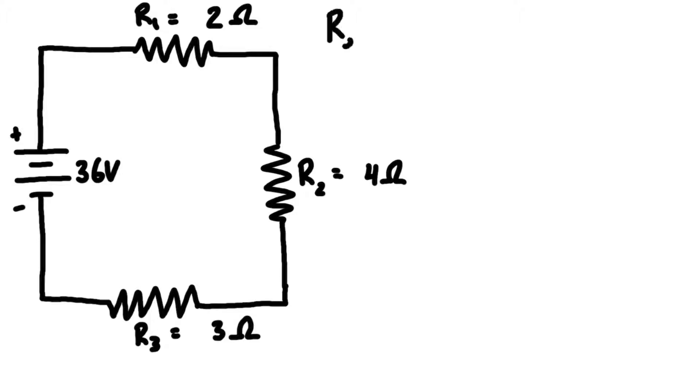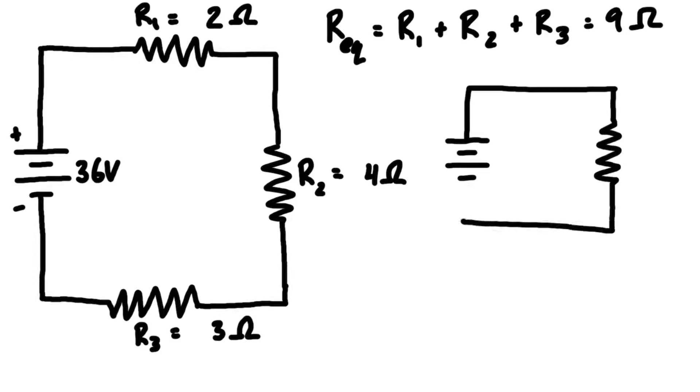It is equal to the sum of the three resistances, which is 2 plus 4 plus 3, and that gives us 9 ohms. We can redraw the circuit with the equivalent resistance to help visualize the problem.